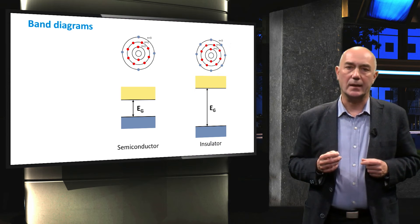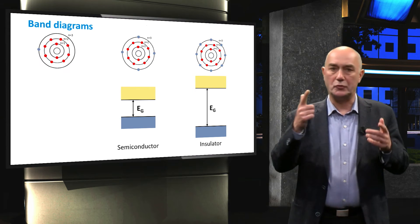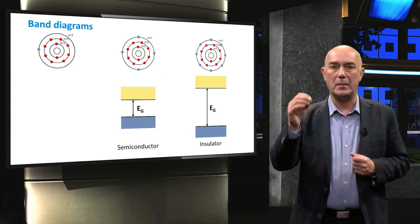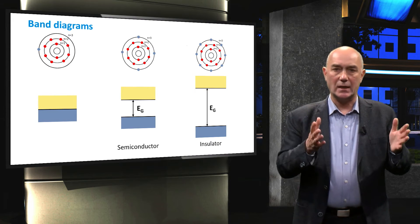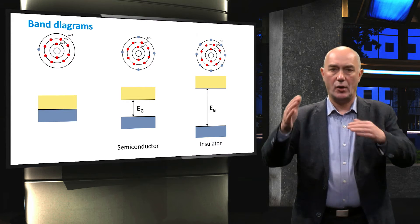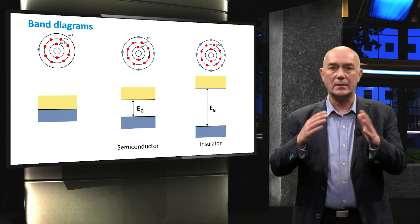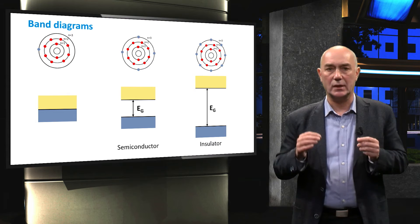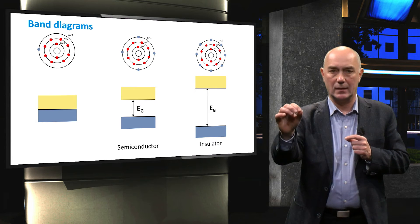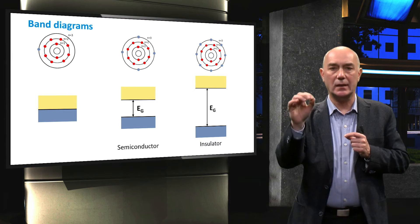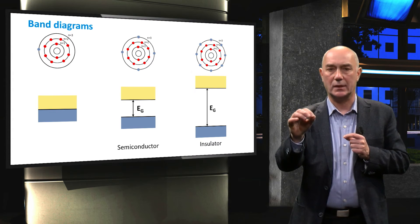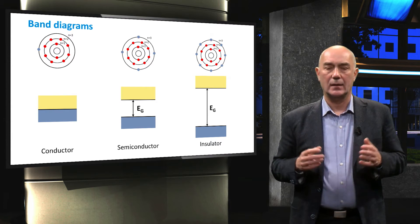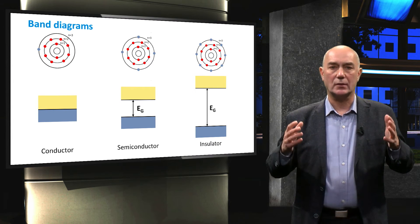Metals, on the other hand, have only one or two electrons in their valence shell, which are very loosely bound. The valence and conduction bands of metals overlap, which means that no external energy source is required for a valence electron to become mobile. Metals, therefore, have a very large amount of mobile electrons and conduct electricity very well. That is why metals are called conductors.